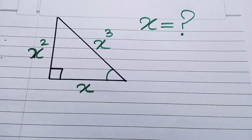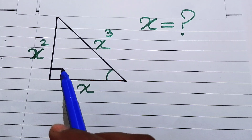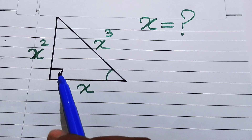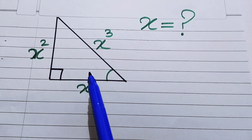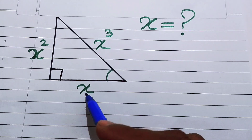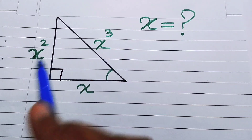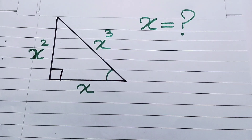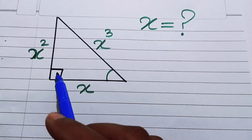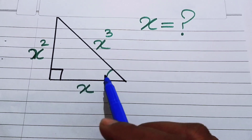Hello everyone, welcome back to the Map of Mathematics. In this video we are going to solve this nice math geometry problem. Here we have a right triangle in which the lengths of the sides are x, x², and x³.